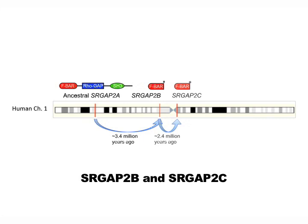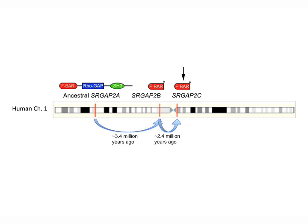The most recent copy, SRGAP2C, has emerged approximately 2.5 million years ago and is now fixed in the modern human population. Interestingly, we found that this human-specific paralog, SRGAP2C, is expressed in the developing and adult human brain and encodes for a truncated version of the FBAR domain of the ancestral SRGAP2 protein.